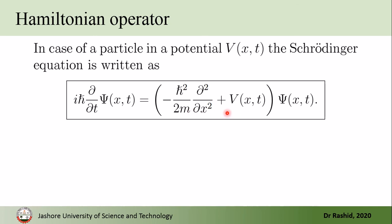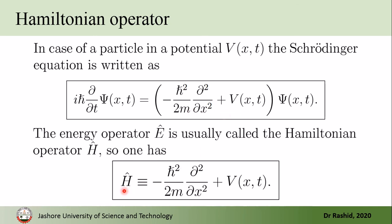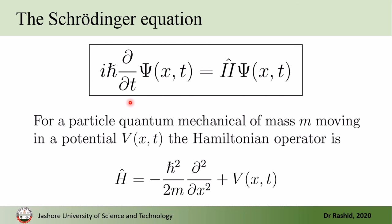The terms in the bracket are called the Hamiltonian operator, written as Ĥ. Ĥ equals the kinetic energy operator plus the potential. Therefore we have the full Schrödinger equation: iℏ(dψ/dt) = Ĥψ, where Ĥ is the Hamiltonian, and for a particle moving in a potential V, the Hamiltonian has this form.